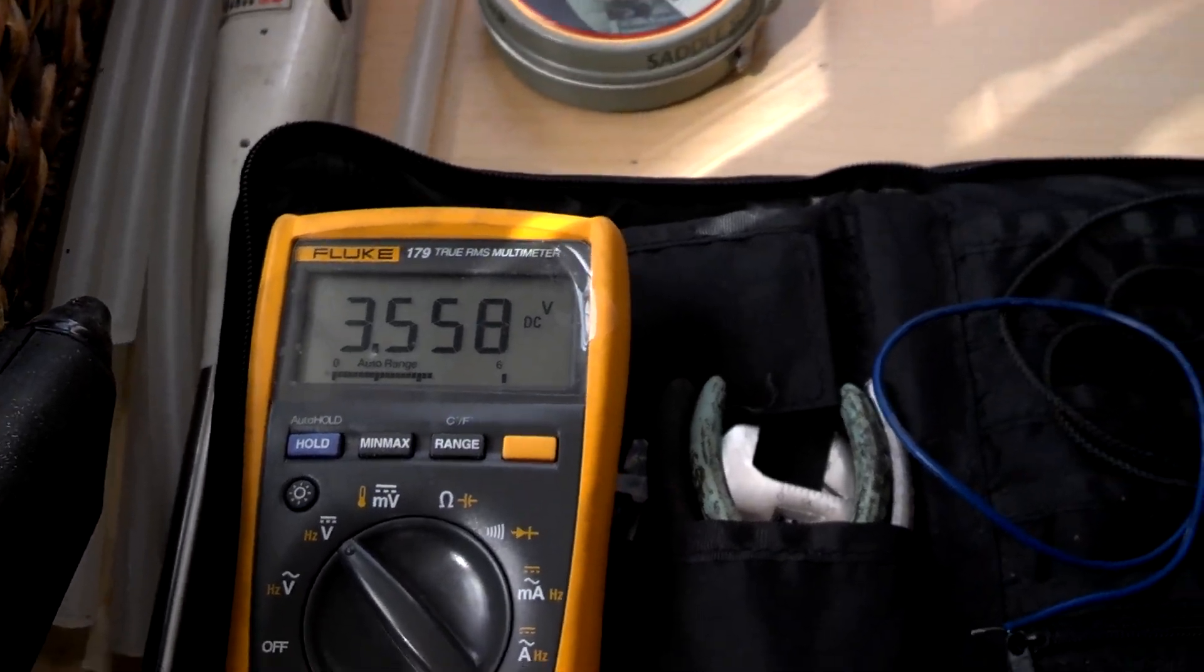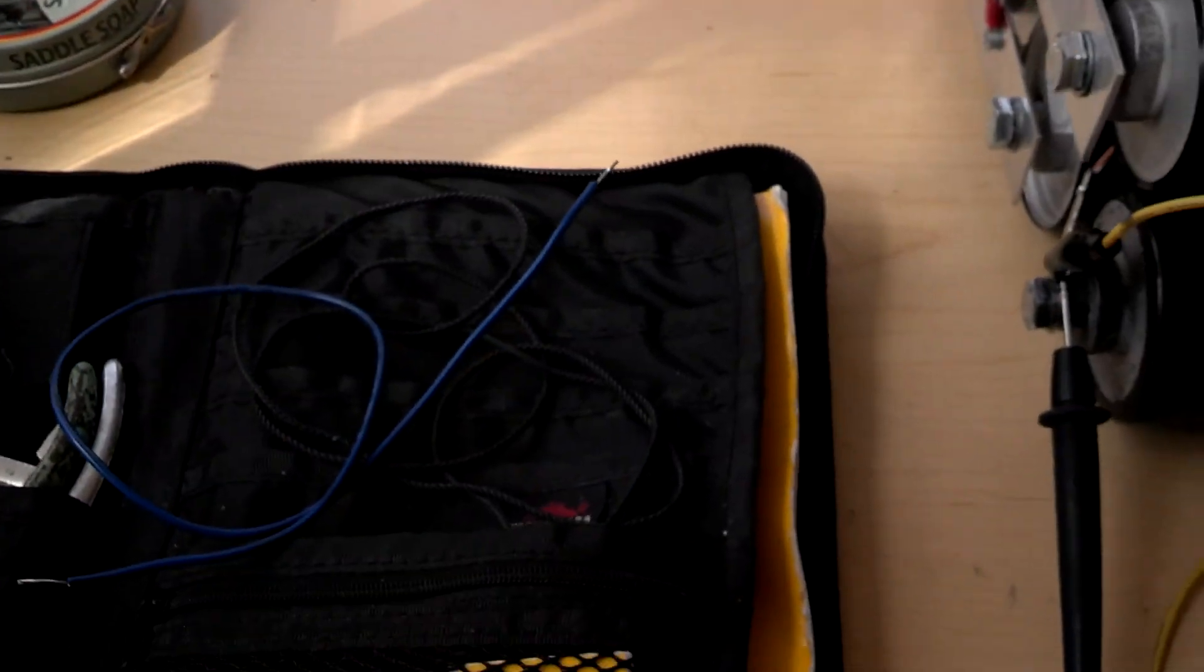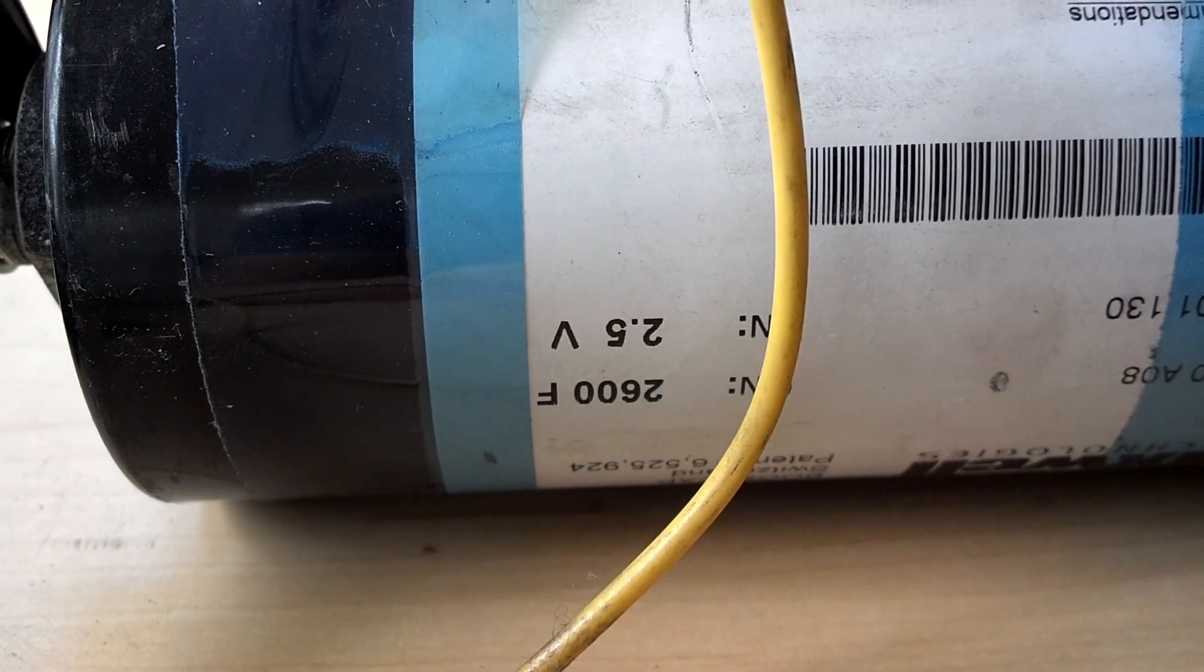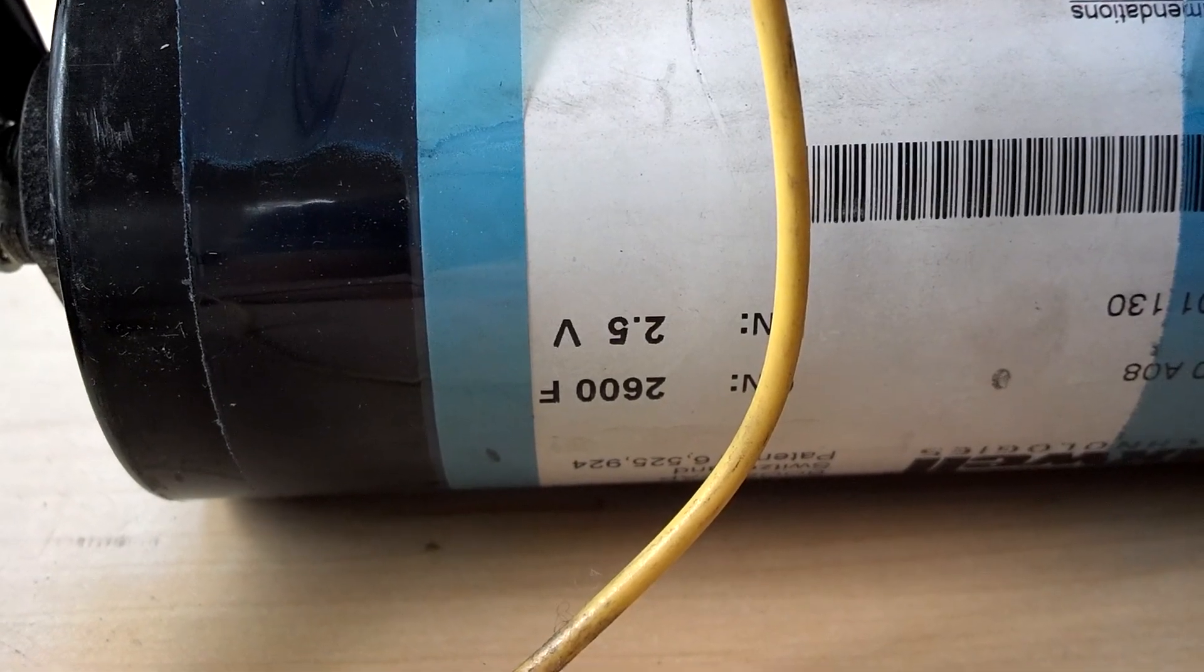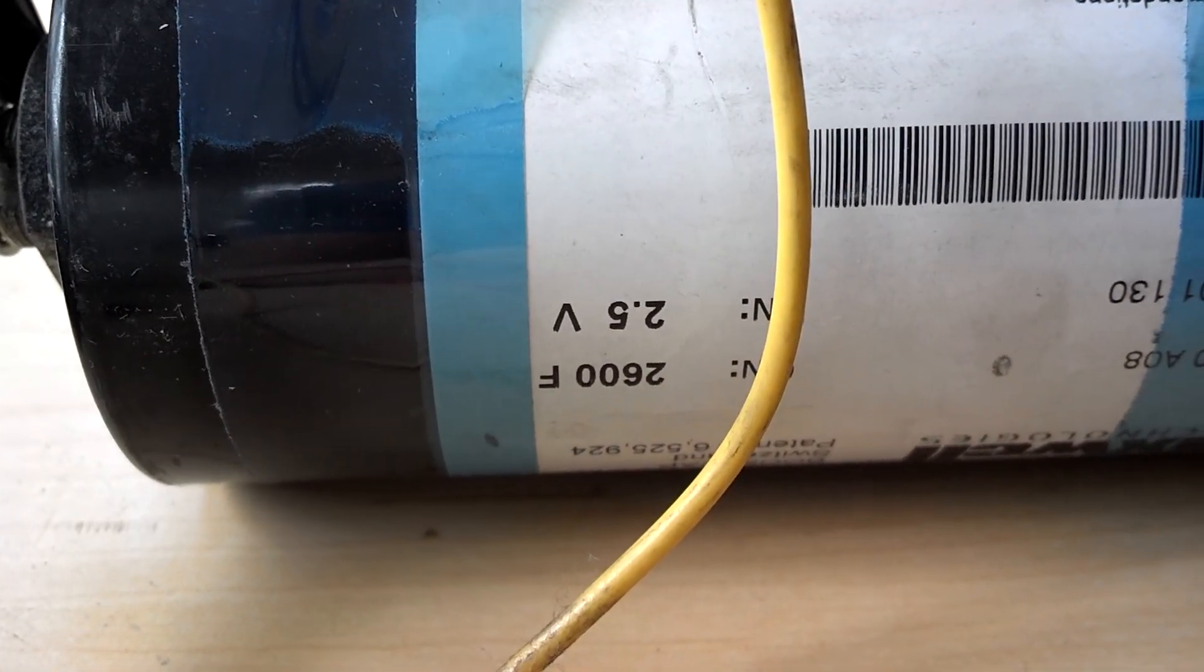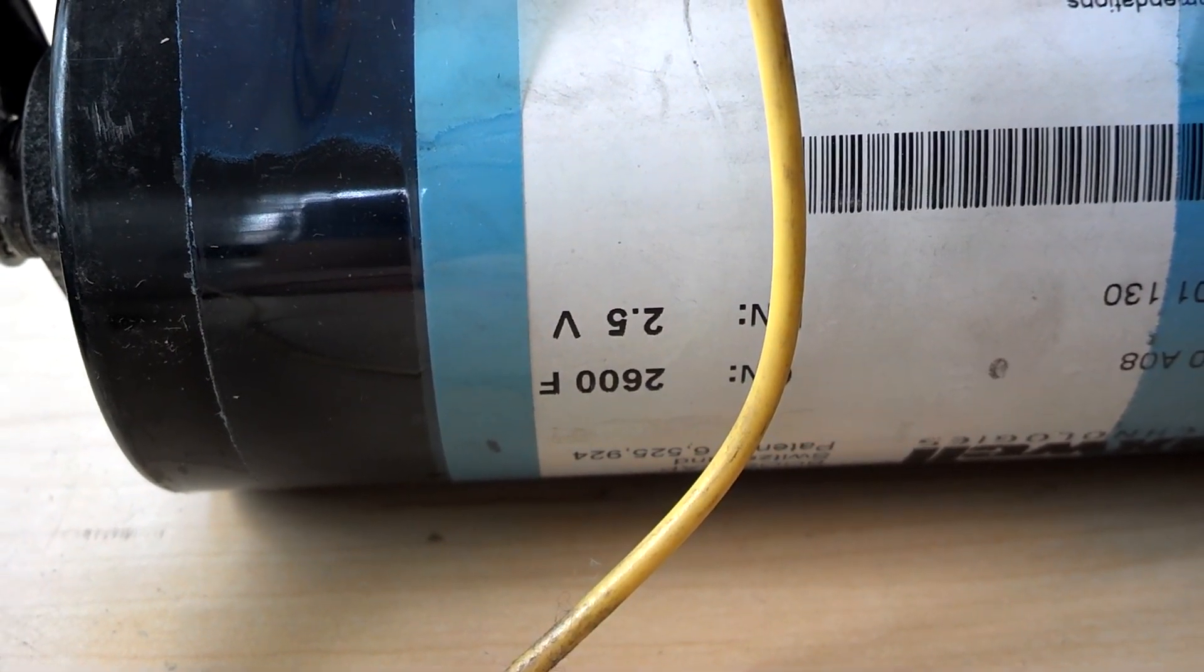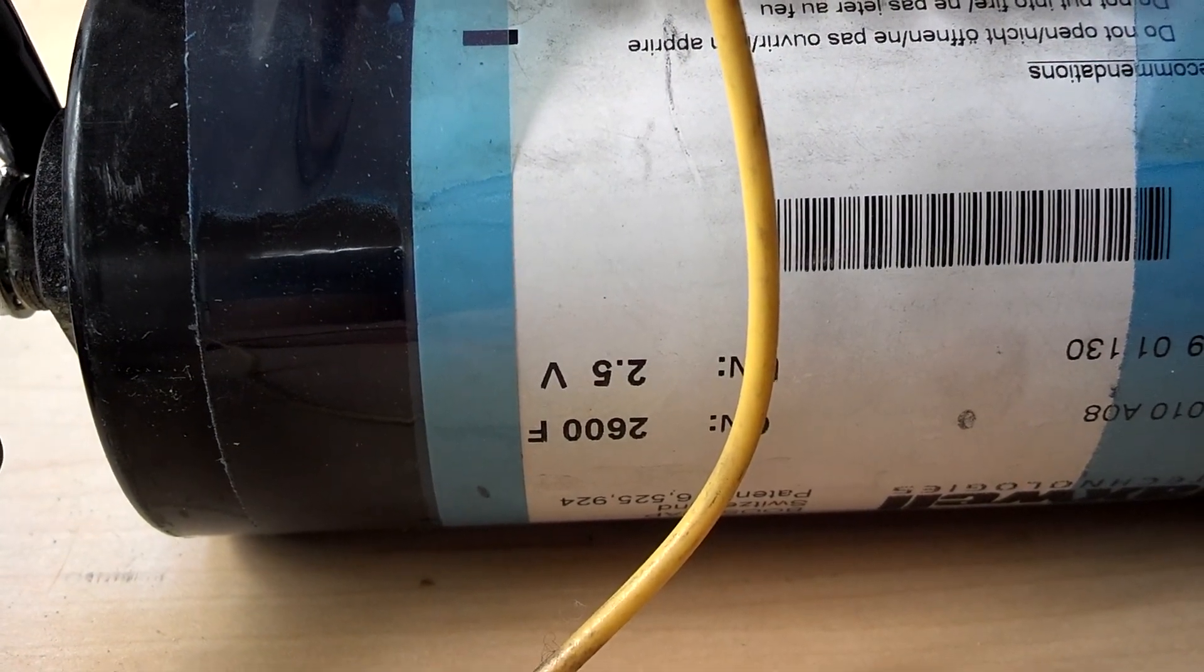I don't think this setup can be left unattended because my capacitors are 2.5 volt, 2600 farad. Again, the distinction that's not microfarad, it's full farad. Seven of those gives me, in series, 17.5 volts.